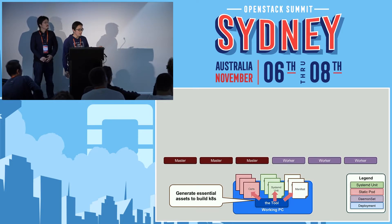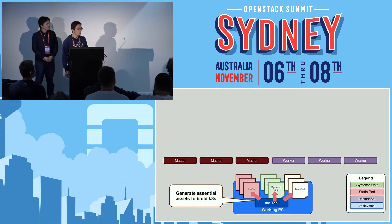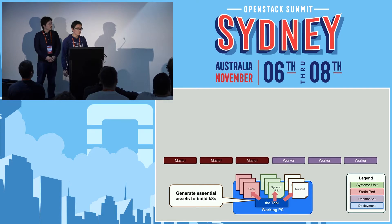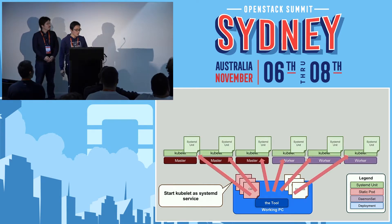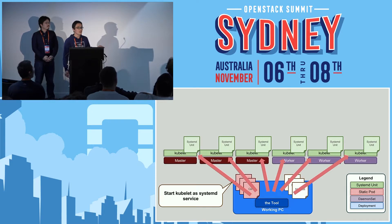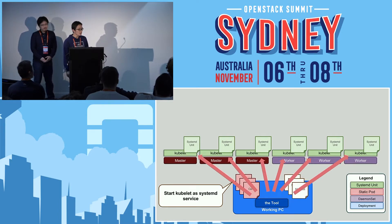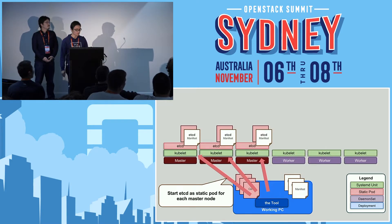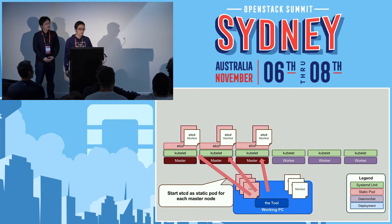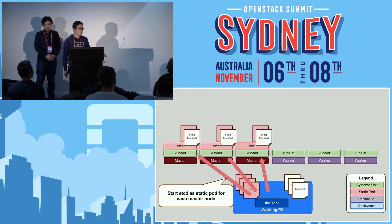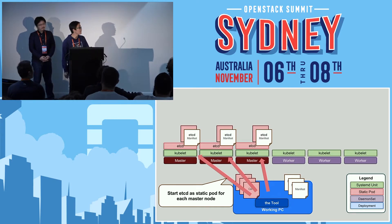These manifests include certificates, systemd units, and Kubernetes manifests. The tools should generate these assets. And if these assets are generated, we can start an essential component called kubelet. Kubelet is responsible for running containers. If kubelet is working, we can start pods. Then etcd, which is used as the Kubernetes backing store, is started as a static pod.